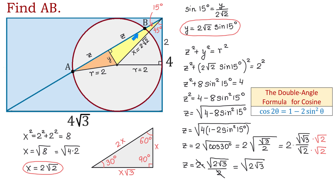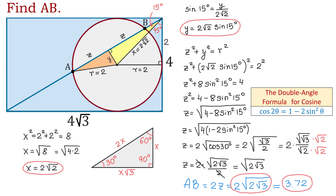The chord AB is 2Z. So AB equals 2Z, which is 2 square root of 2 square root of 3, or approximately 3.72 units. I hope you enjoyed this problem. Please give me a like, write a comment, and thank you for watching.